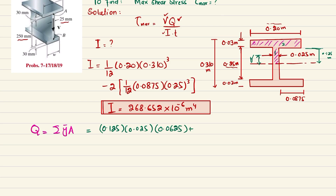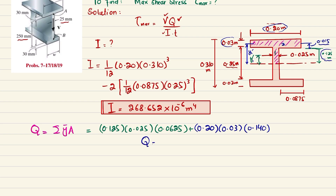The second portion is the top flange: area = 0.20 × 0.03, and its centroid distance from the neutral axis is ȳ₂ = 0.125 + 0.015 = 0.140 m. Summing both contributions gives Q = 1.0353 × 10⁻³ m³.